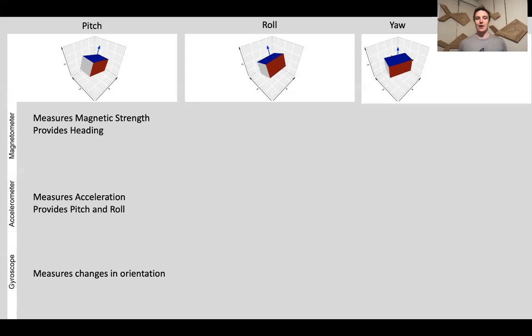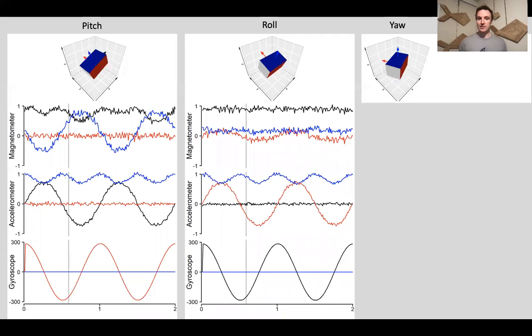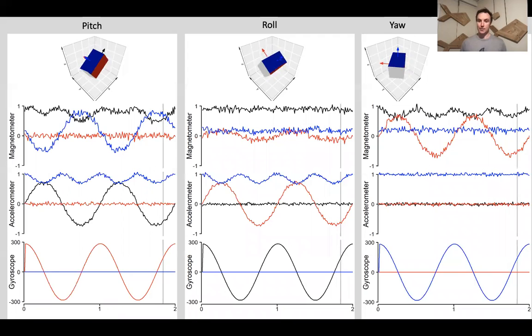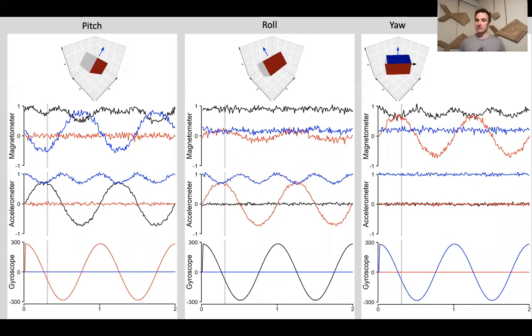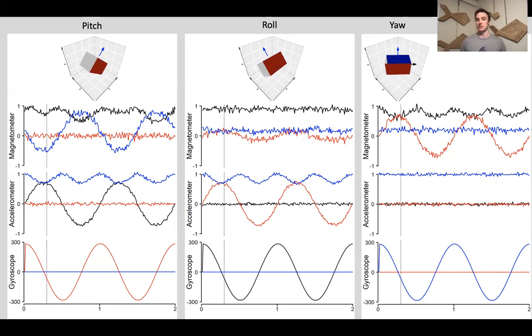During pitching motion, the magnetometer and accelerometer are both detecting these changes. However, if we compare this to roll, you see an accelerometer is able to detect changes in roll, but a magnetometer is not, because you're rolling around the magnetic field. As well as yaw, an accelerometer does not pick up, but a magnetometer does. So independently, no one sensor provides you a complete picture, but by fusing them all together, they provide you really good estimates of pitch, roll, and yaw.